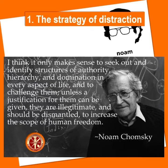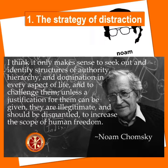1. The Strategy of Distraction. The primary element of social control is the strategy of distraction, which is to divert public attention from important issues and changes determined by the political and economic elites, by the technique of flooding continuous distractions and insignificant information. Distraction strategy is also essential to prevent public interest in essential knowledge in the areas of science, economics, psychology, neurobiology, and cybernetics.